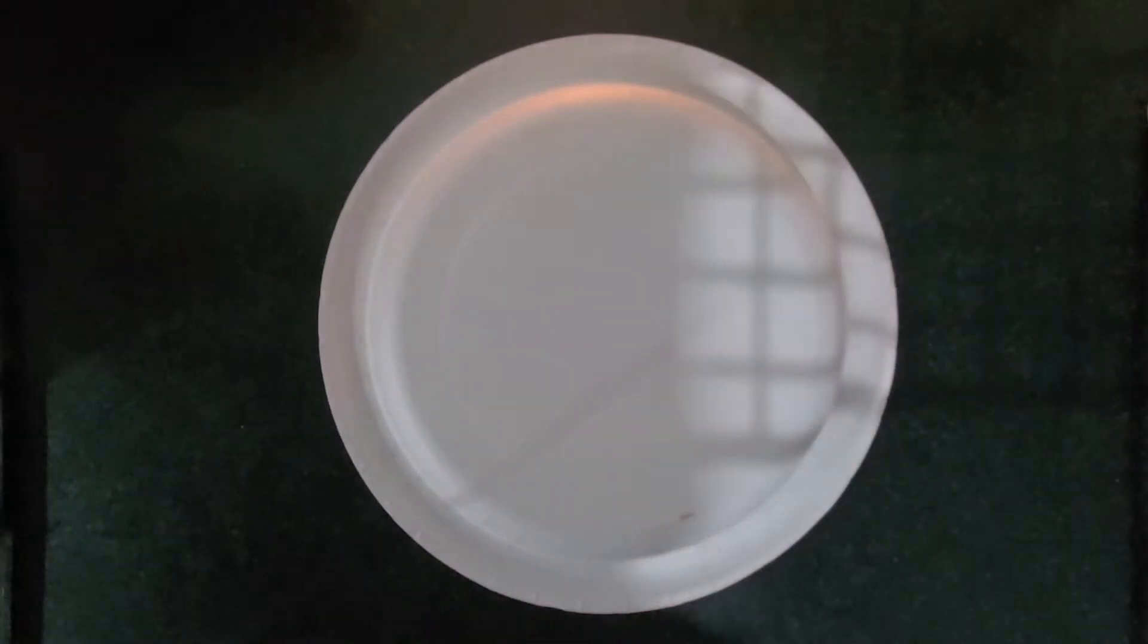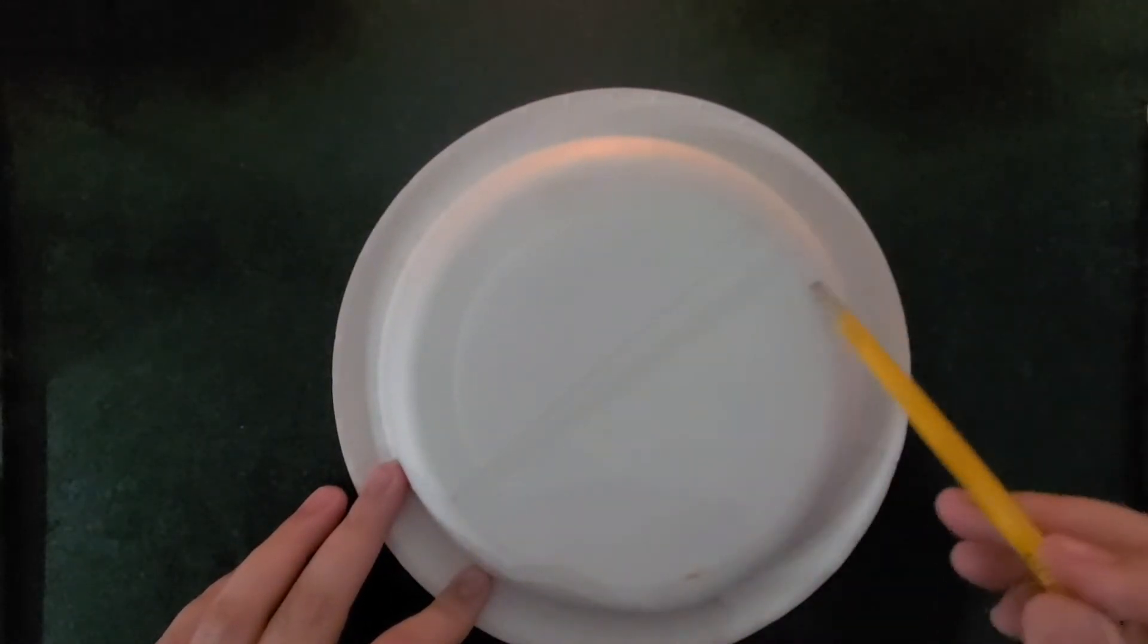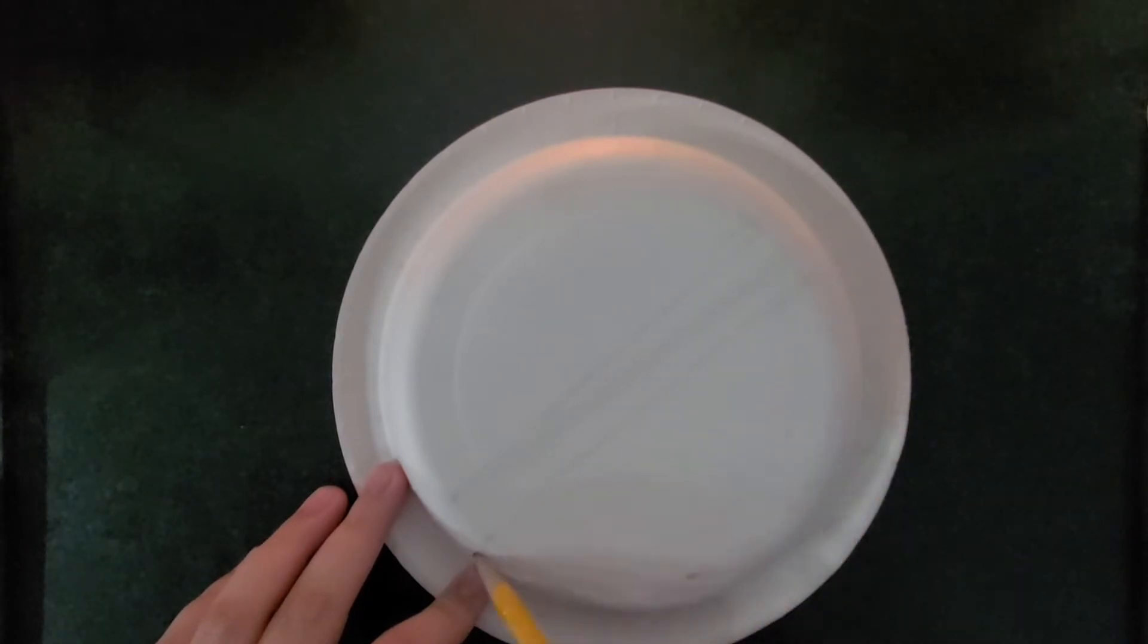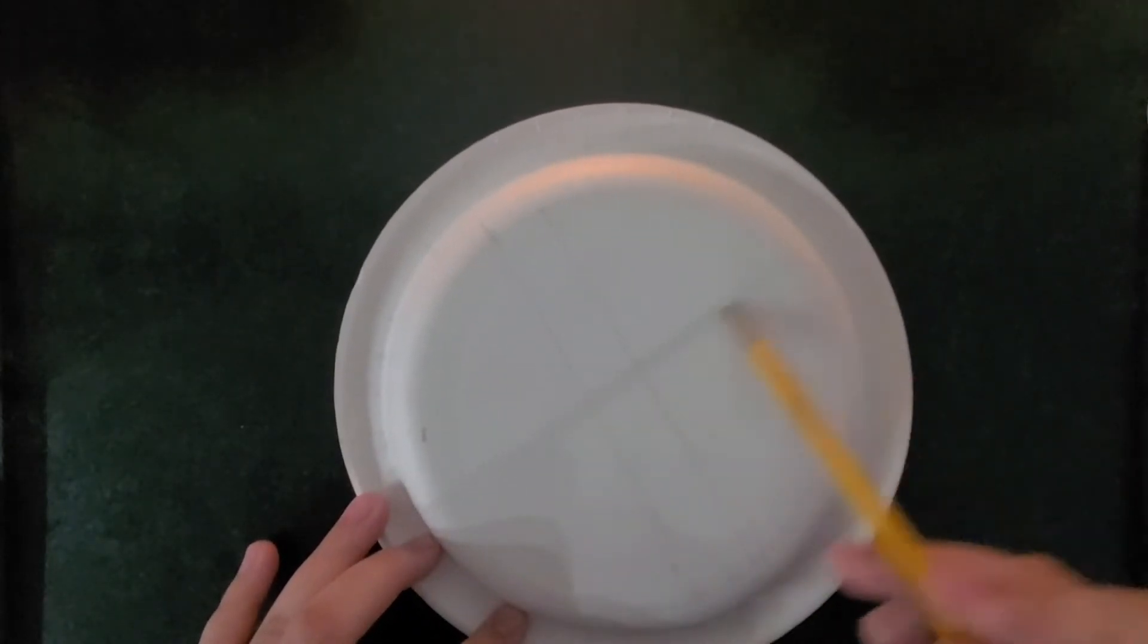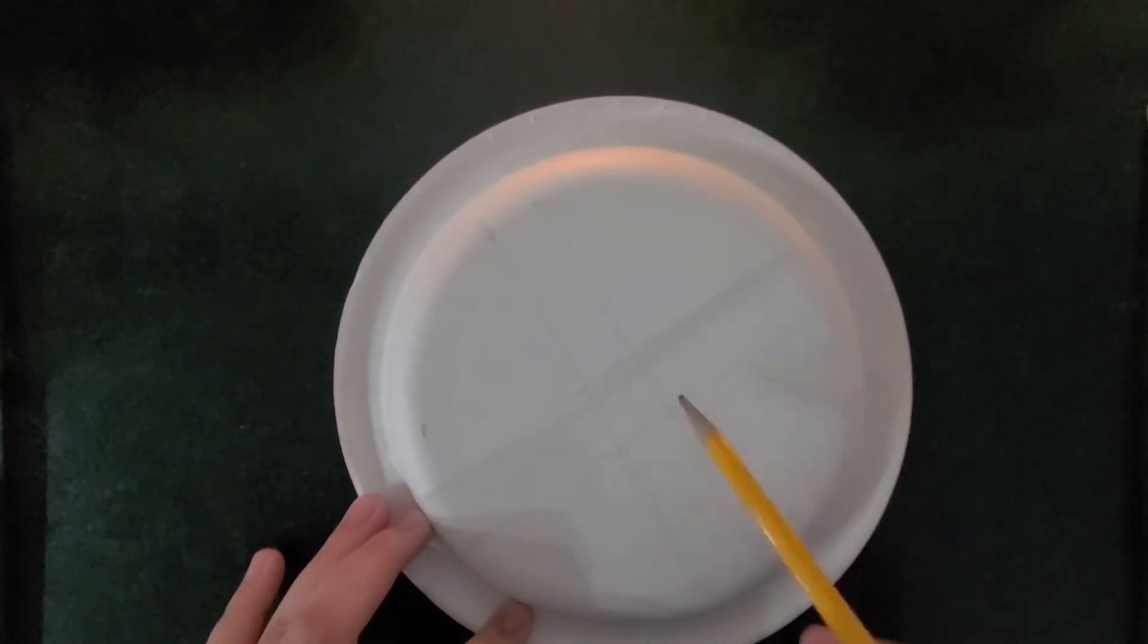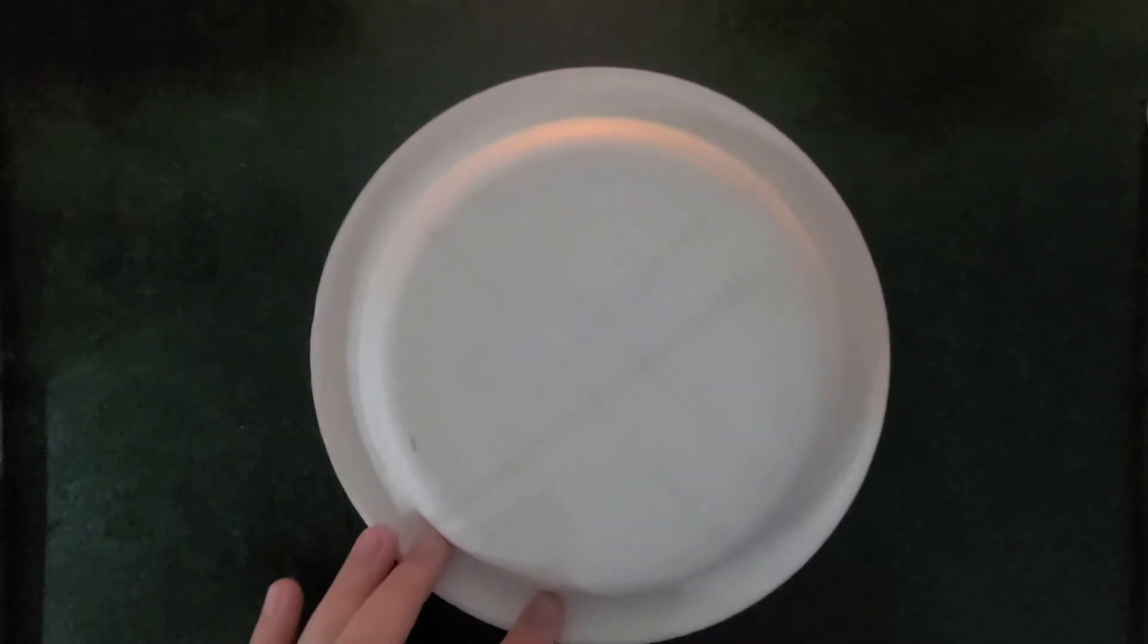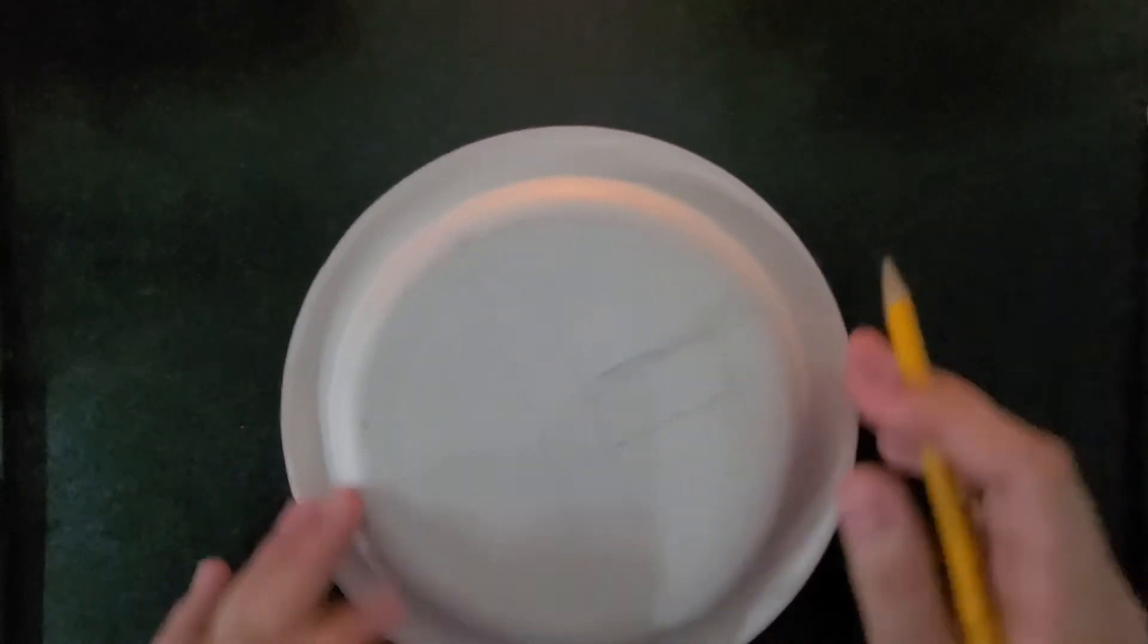First up we're going to bring out our paper plates and with our pencil we are going to trace an X on the back of this paper. Don't go too dark so that you don't see the pencil, you can only see the color. I'm going to darken it up just a bit for you guys so you guys can see where the X is placed on this paper.